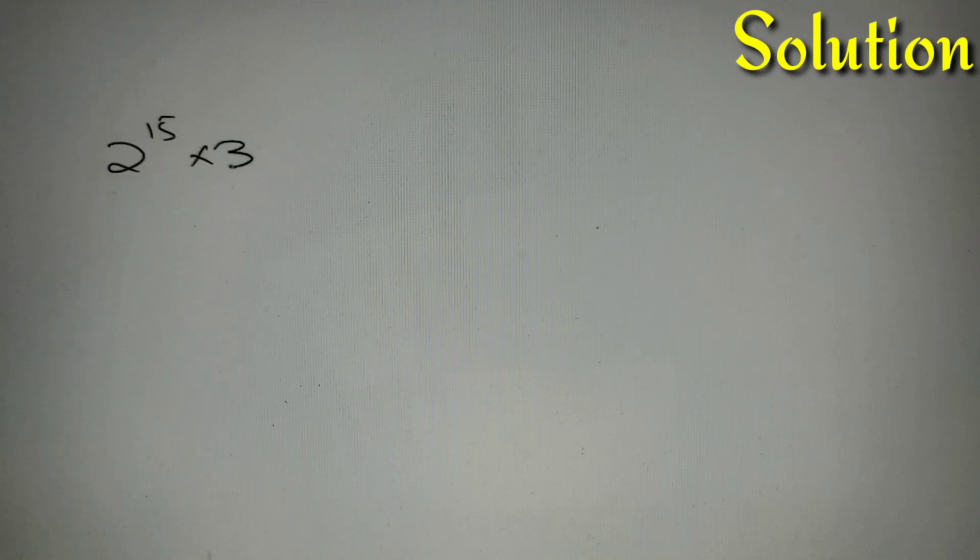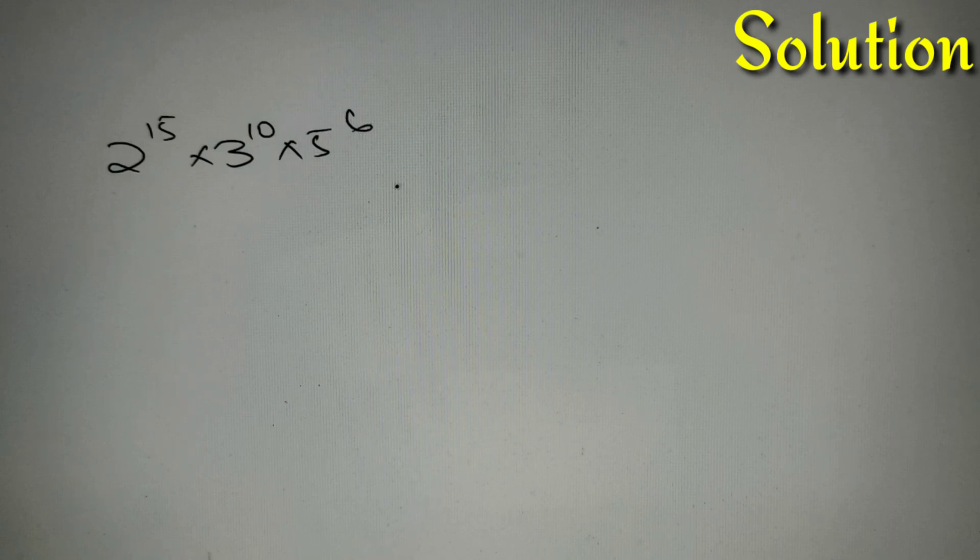According to our given question, we have the number 2 raised to the power 15 into 3 raised to the power 10 into 5 raised to the power 6, and we have to find how many factors of this number are either perfect square or perfect cube or both of them.